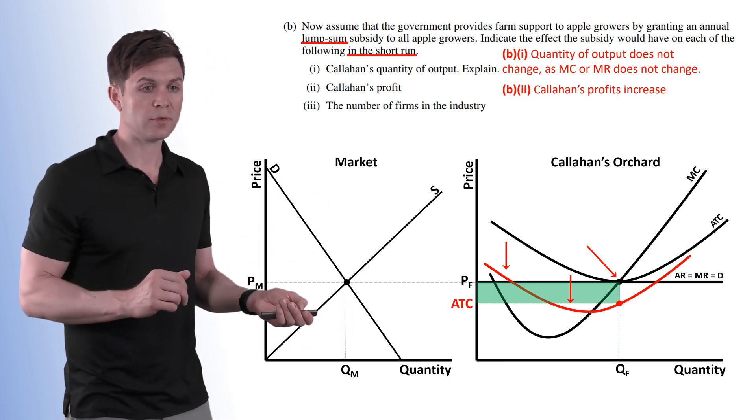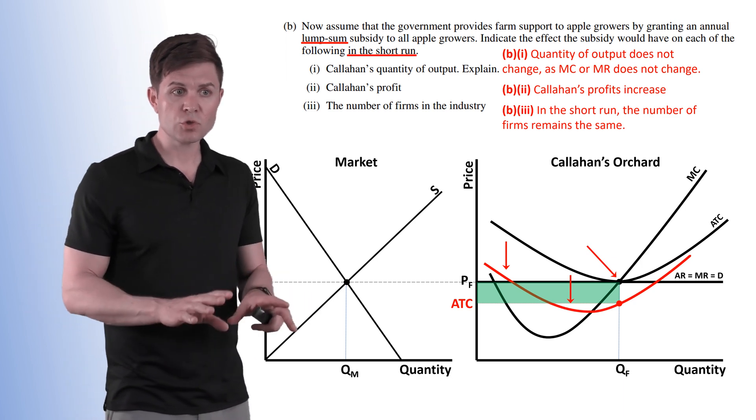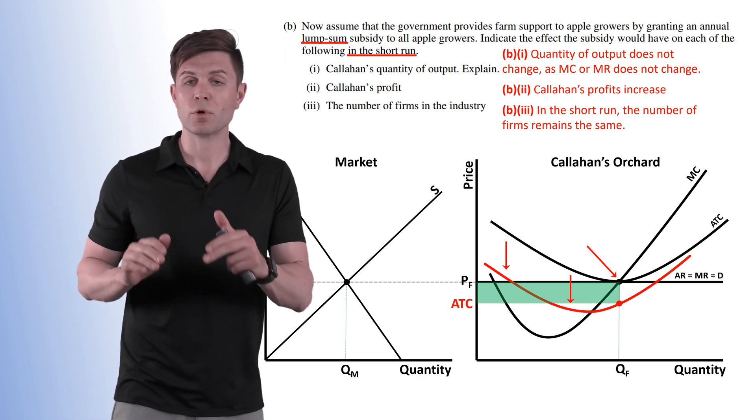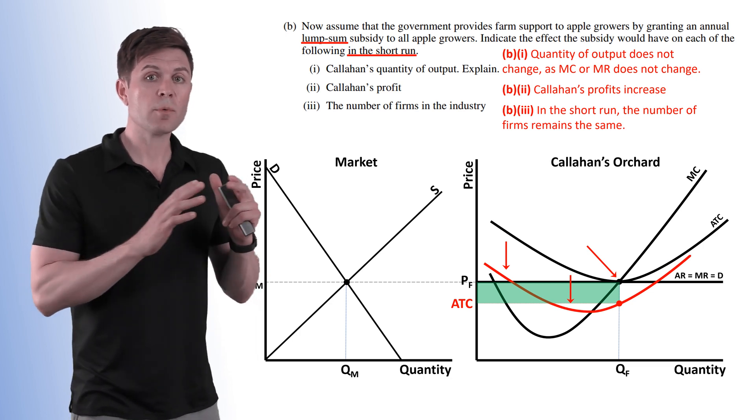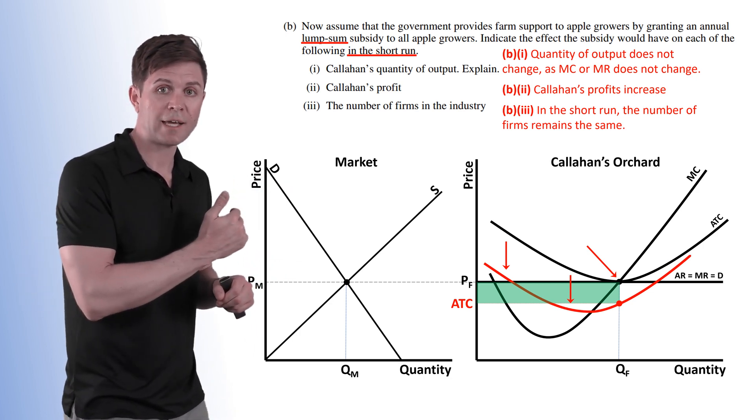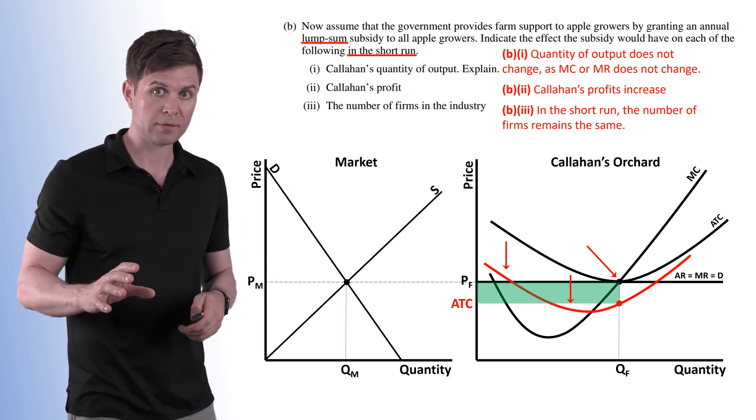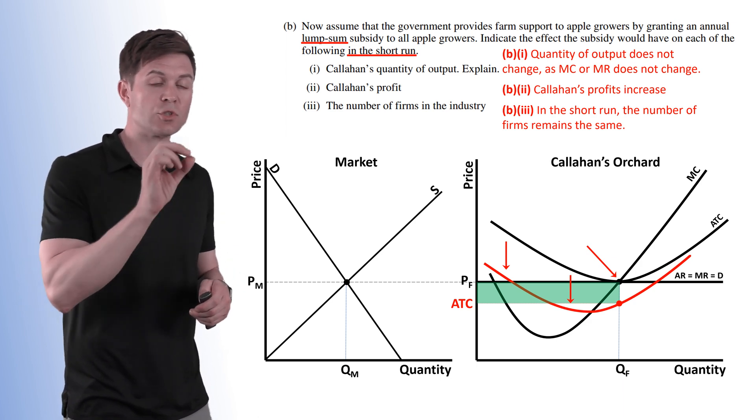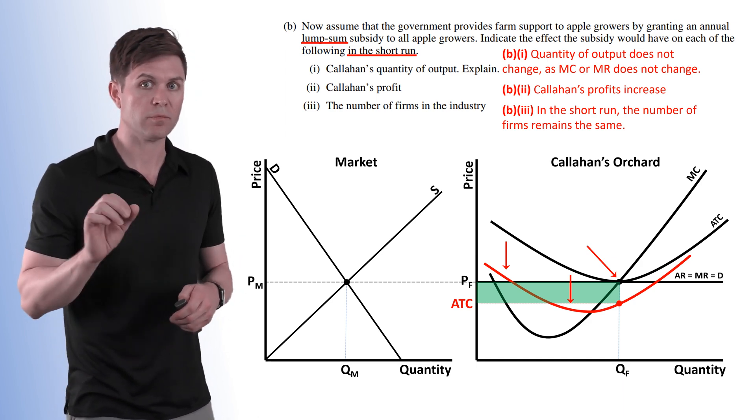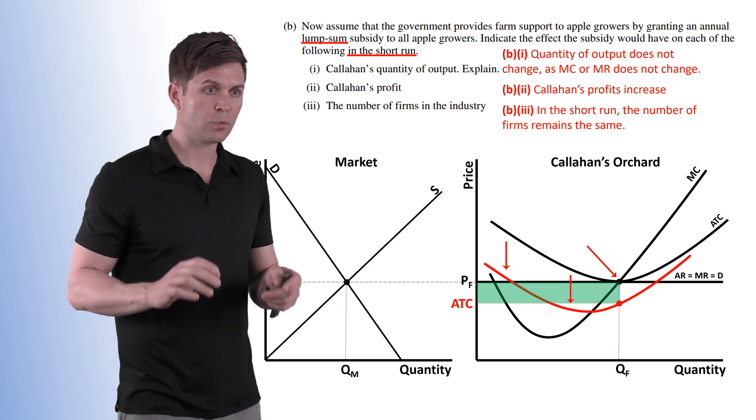Now the number of firms in the industry. So in the short run the number of firms remain the same. The number of firms changing on the market side is a long run impact. So make sure you're paying attention, short run versus long run. Very important to differentiate between those two.